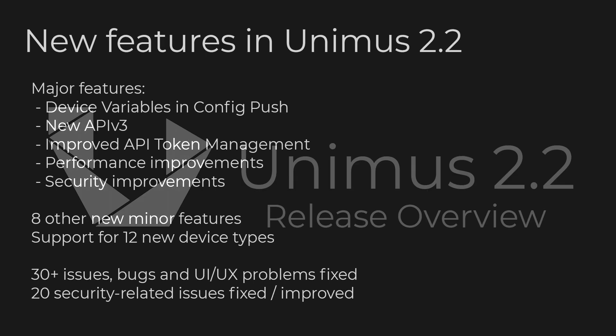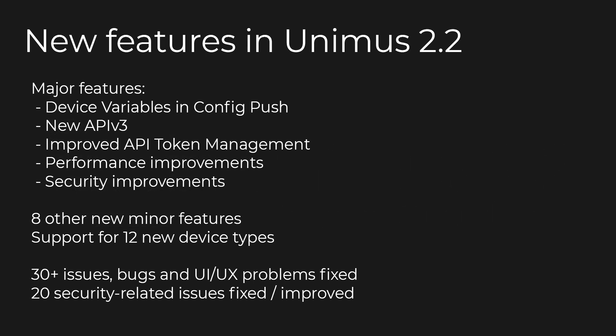Let's look at what's new. We've added support for variables to config push, released the new API version 3, improved the API token management, and also put heavy focus on performance, with a single Unimus instance now supporting up to 120,000 devices. We have also invested significant time into security improvements. There are also other minor new features on top of 33 bug fixes, 20 security-related fixes, and support for 12 new device types from nine different vendors.